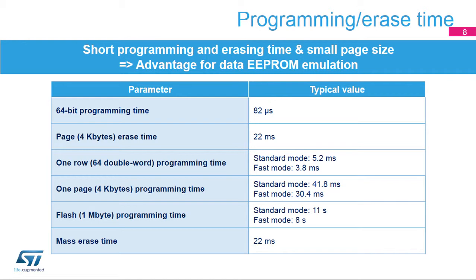To program one page, 4 kilobytes, 41.8 milliseconds are needed in standard mode and 30.4 milliseconds in fast mode. For the complete flash memory to be programmed, it requires 8 seconds in fast mode. The page erase time is 22 milliseconds, and it also requires only 22 milliseconds to erase the complete flash memory. The short programming and erase time, plus the small page size, make it convenient for data EEPROM emulation.